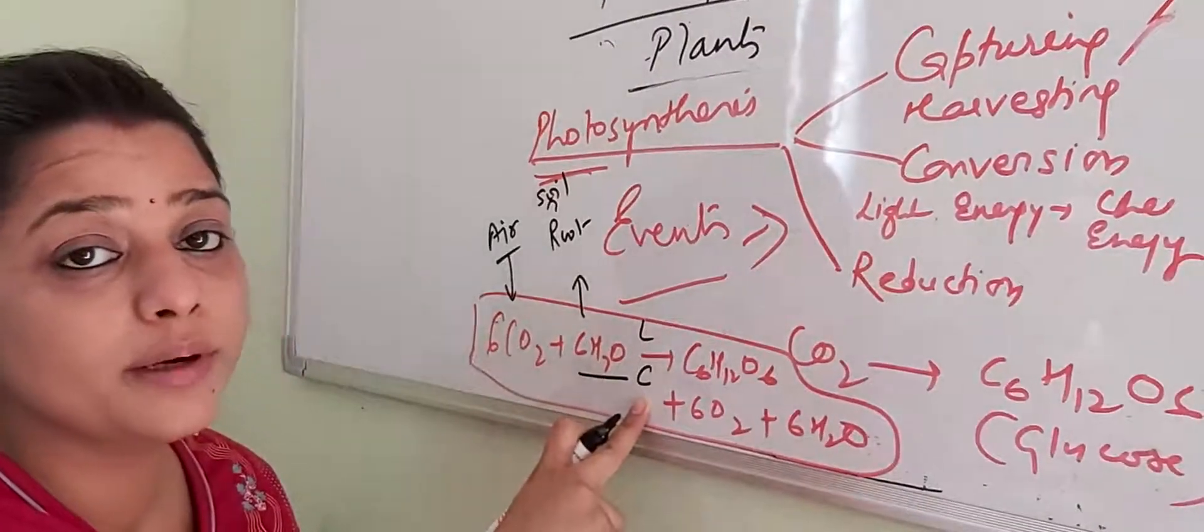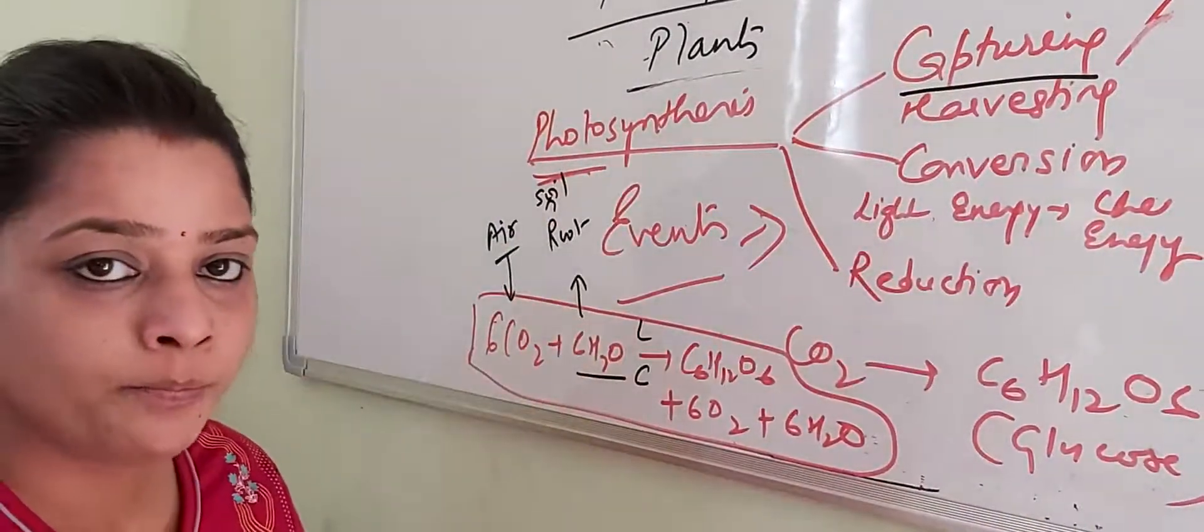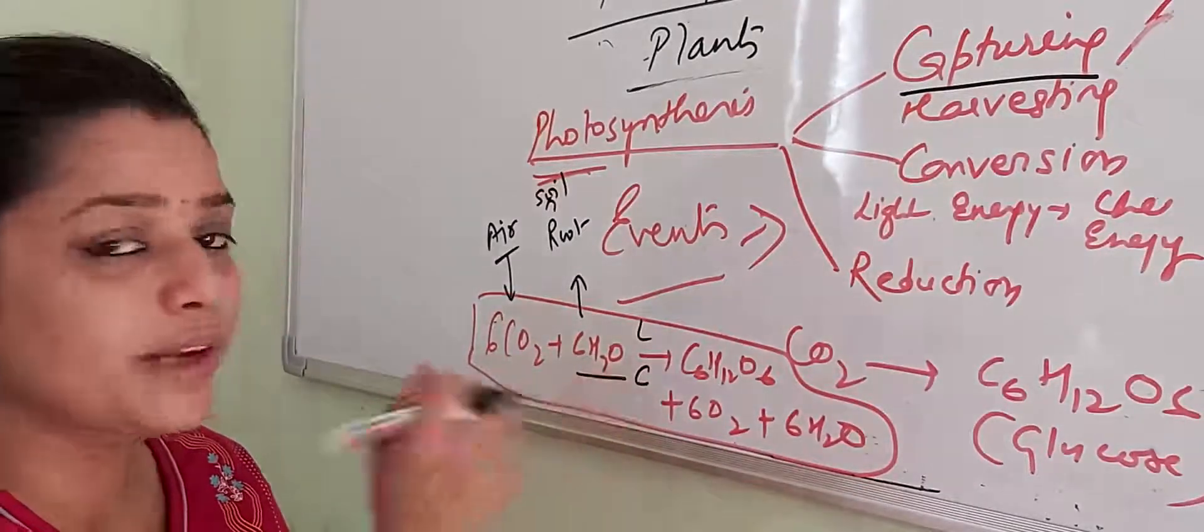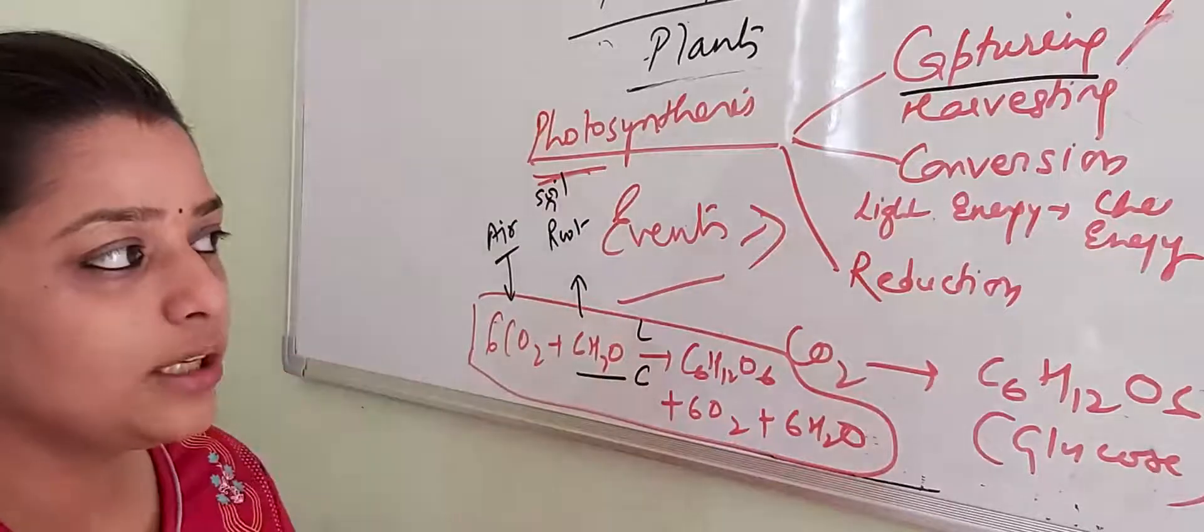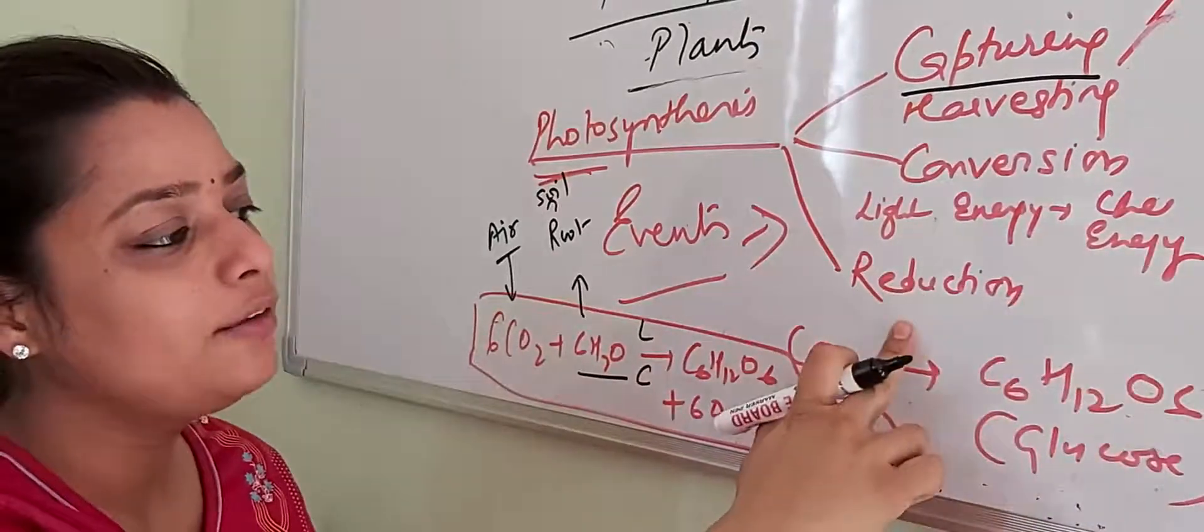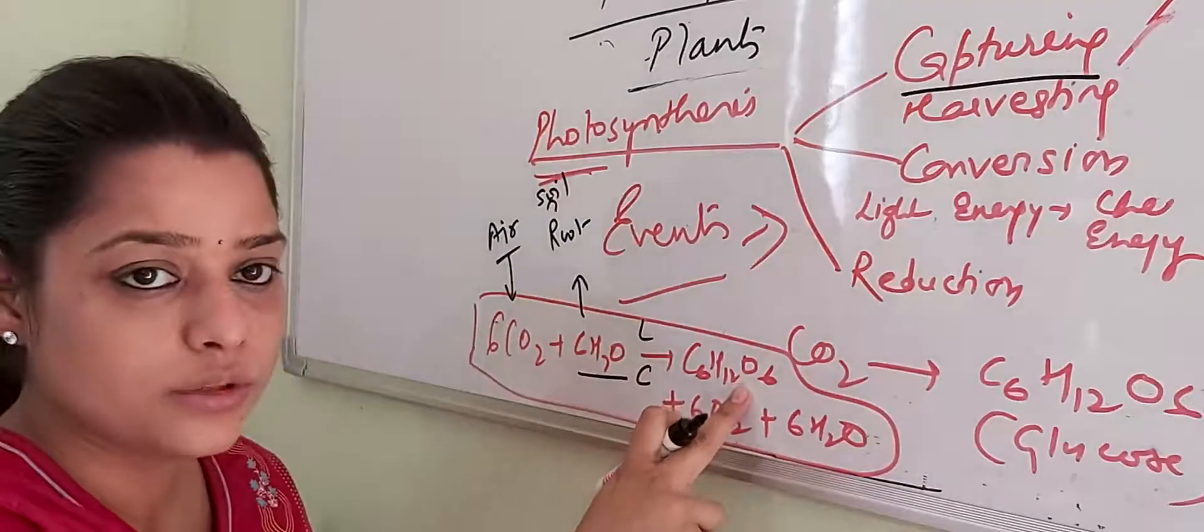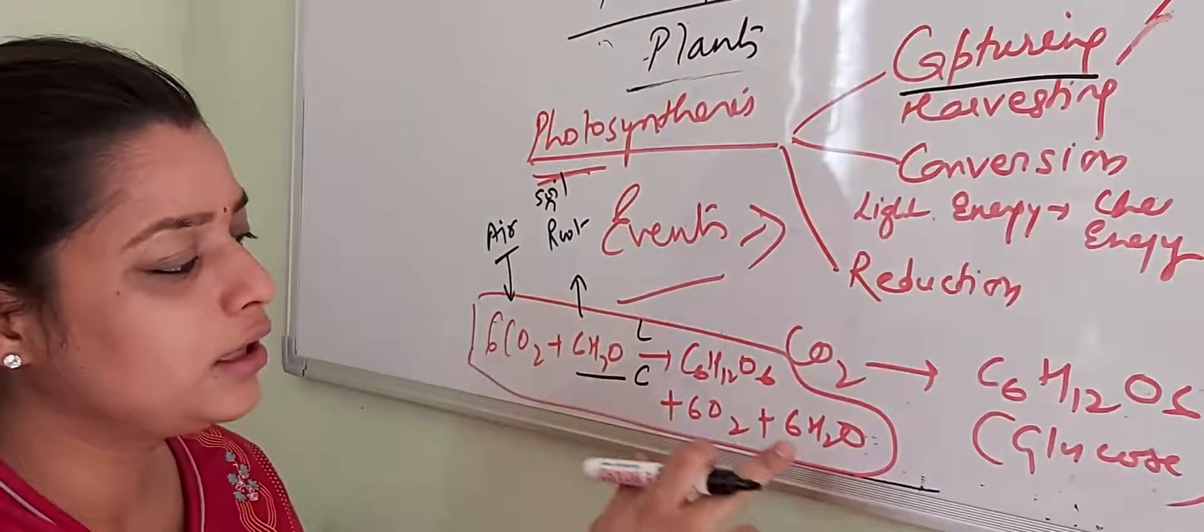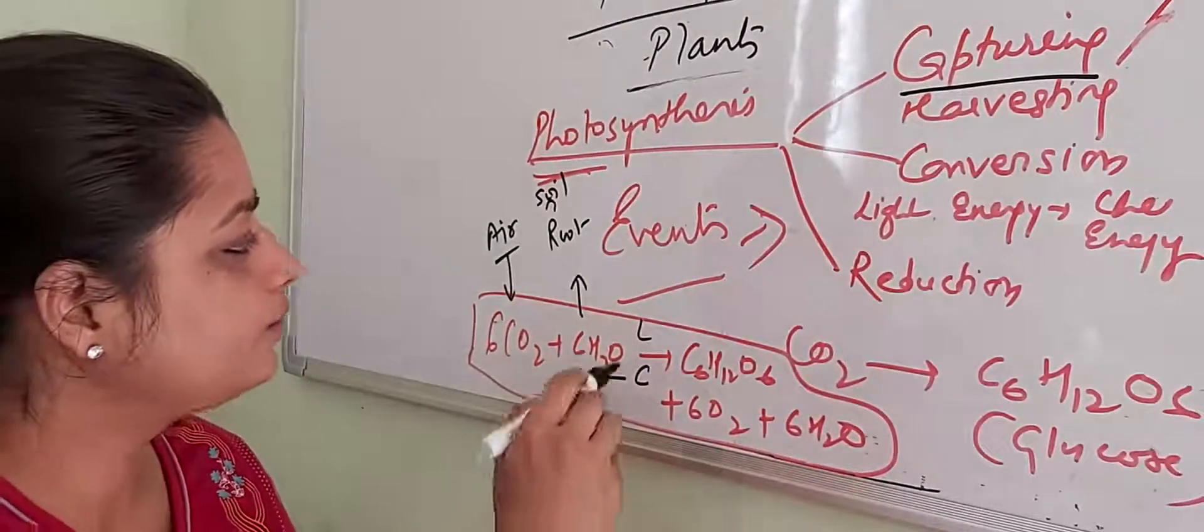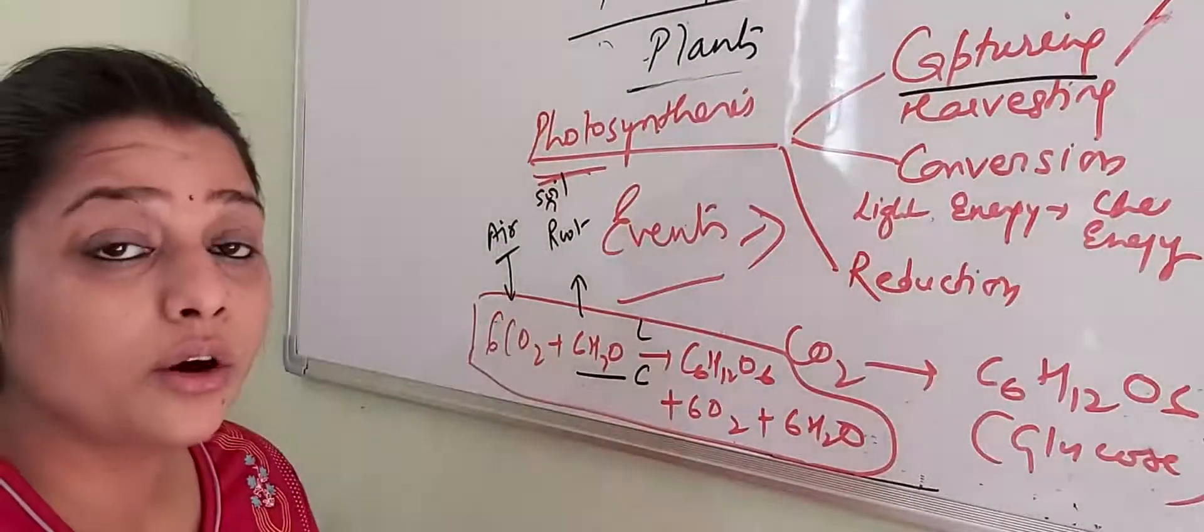Now what is chlorophyll pigment doing? Chlorophyll pigment is capturing or harvesting that light and providing energy for the reaction. Then chemical reactions take place where this light energy turns into chemical energy. Finally, this raw material gets converted into glucose with the release of oxygen, and the byproduct is H2O. This is the equation of autotrophic nutrition.